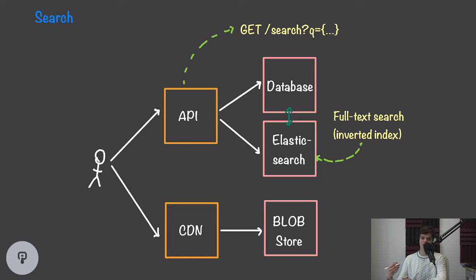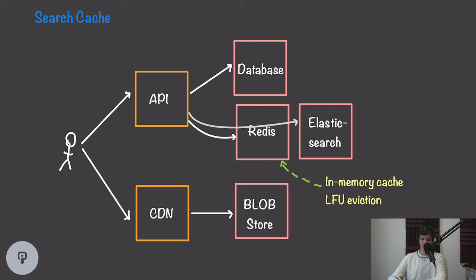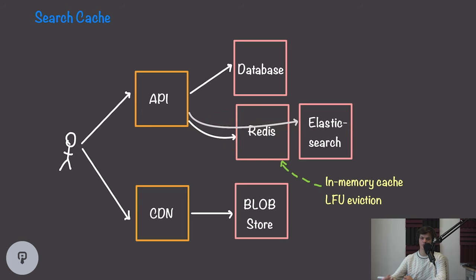Elasticsearch is well-suited here because it can be sharded and replicated, distributing load across multiple machines. Even under high search volume, we can scale our Elasticsearch cluster to handle that load. A further optimization would be introducing an in-memory cache such as Redis. Instead of always hitting Elasticsearch, our API would first check Redis, which would hopefully have results cached in memory. Since Elasticsearch is primarily disk-based, caching results in memory significantly reduces latency and load on the Elasticsearch cluster. If data isn't in Redis, the API falls back to Elasticsearch as the source of truth. Redis would use least frequently used (LFU) eviction, keeping the most frequently searched items cached.